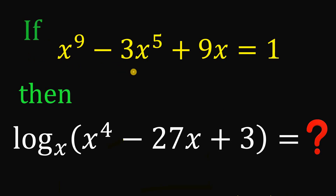If x raised to the power of 9 minus 3x raised to the fifth power plus 9x equals 1, then what is the numerical value of logarithm of the expression x raised to the fourth power minus 27x plus 3 to the base of x?